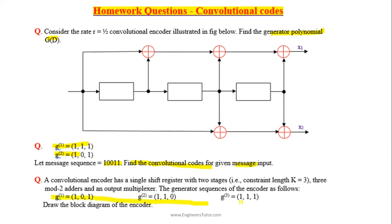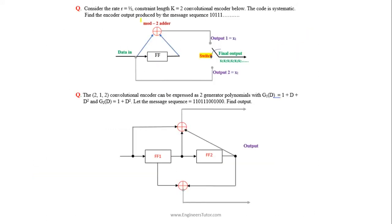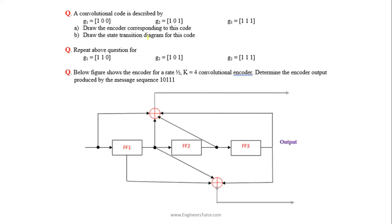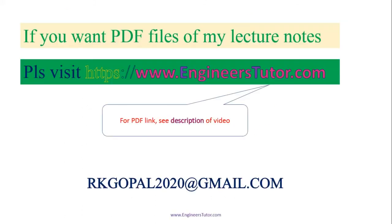Here generator sequences are given. These problems are repeated to find encoder outputs. Again generator sequences are given and we need to find the encoder output for the given message input.